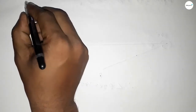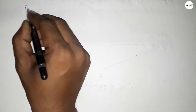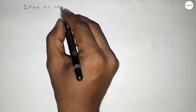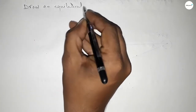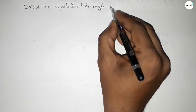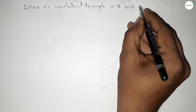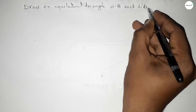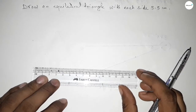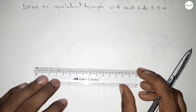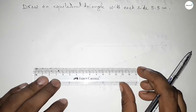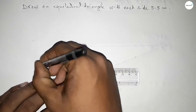Hi everyone, welcome to SSR Classes. Today in this video we have to draw an equilateral triangle with each side 5.5 centimeters. So let's start the video. First of all, drawing 5.5 centimeters by scale.